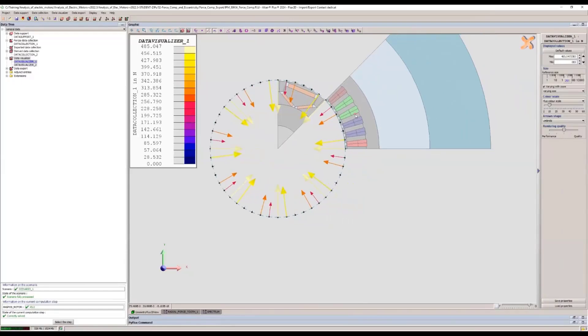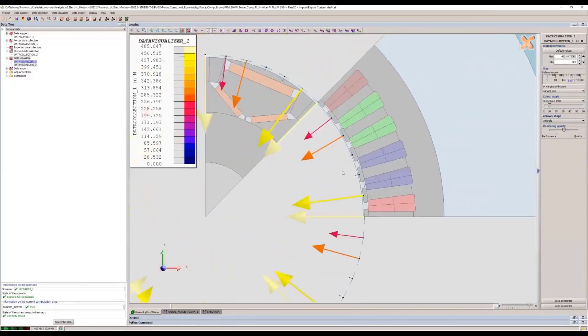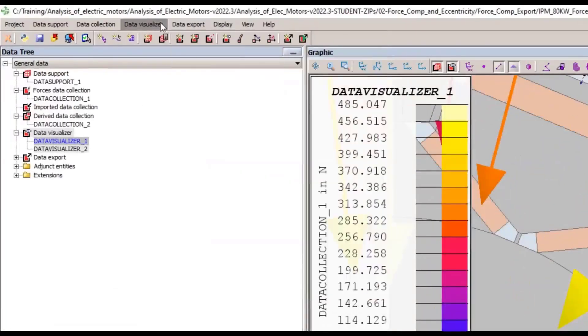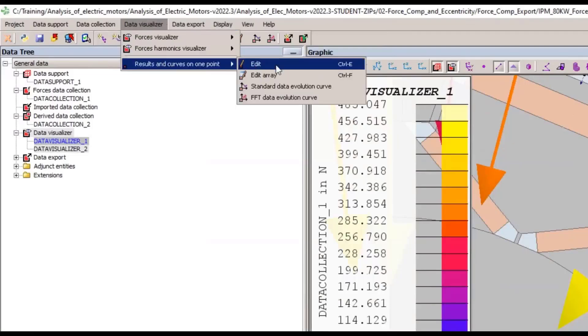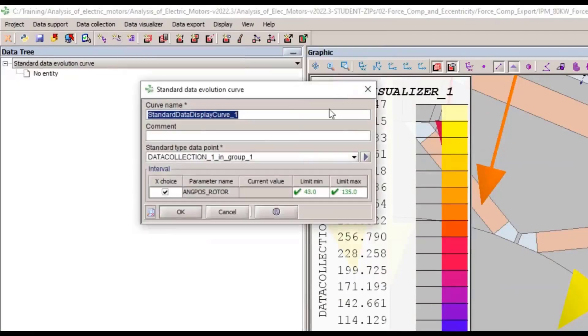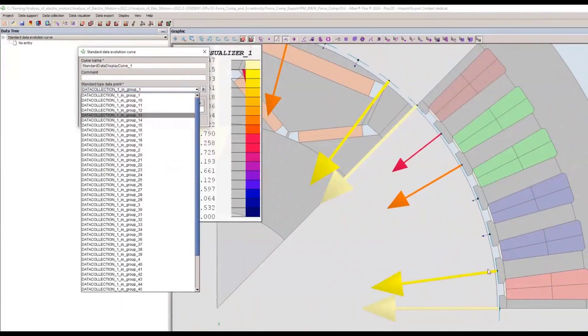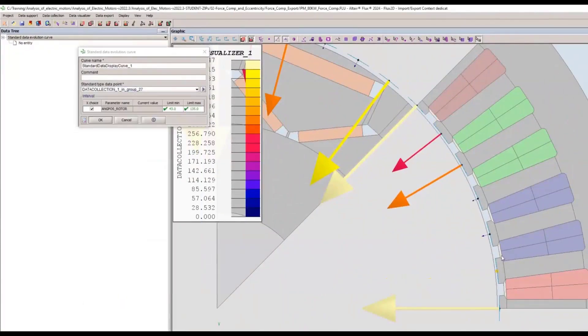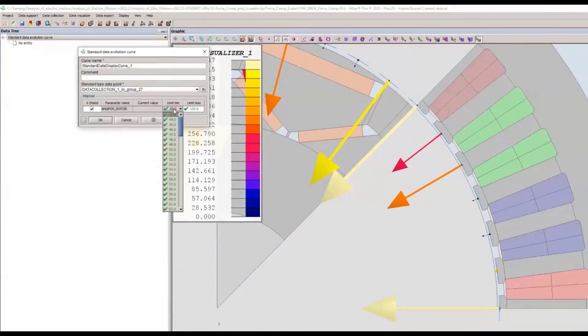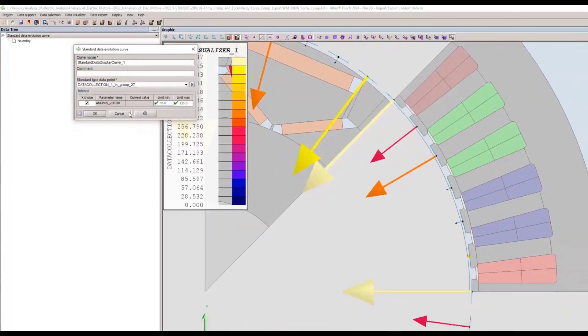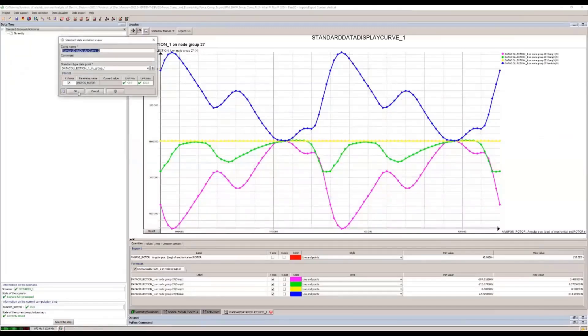And of course, if you want to see the evolution of this force versus time, then we have a specific curve option. So here you can go create a standard data evolution curve. We can choose which tooth we want to select. So let's say this one, select the interval for the curve, and then we'll have the curve with the radial and tangential components versus time.